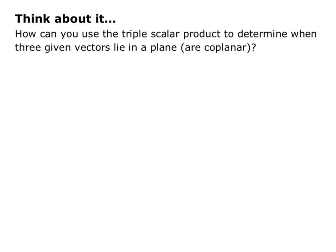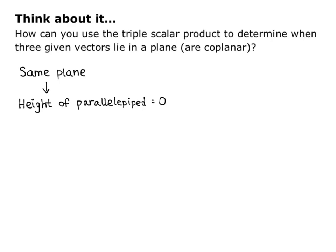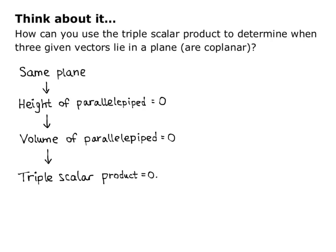Let's think a little deeper: how can you use the triple scalar product to determine when three given vectors lie in a plane—in other words, are coplanar? If they're in the same plane, the height of the parallelepiped is 0, which means the volume is 0. Since the volume equals the absolute value of the triple scalar product, if the volume is 0, the triple scalar product must be 0. So three vectors are coplanar if and only if their triple scalar product is 0.